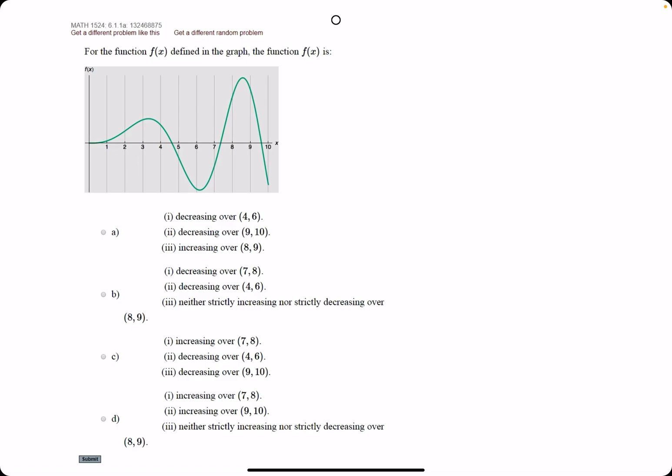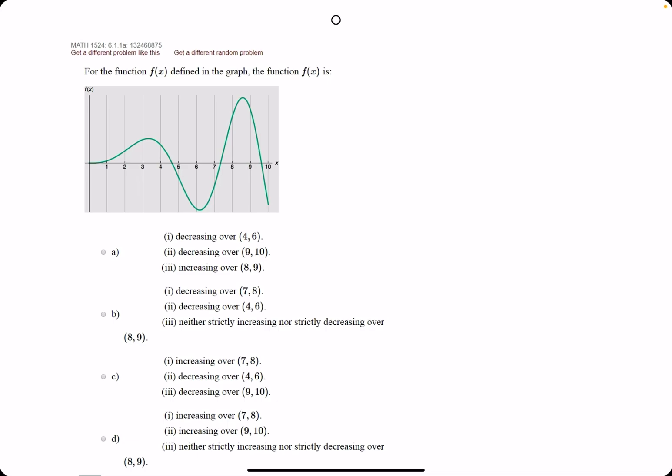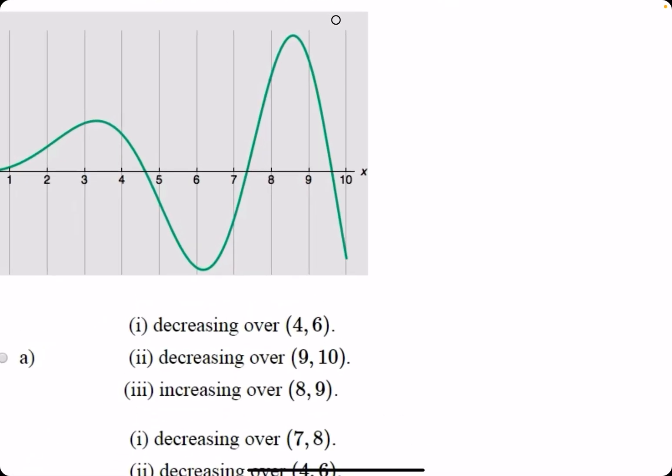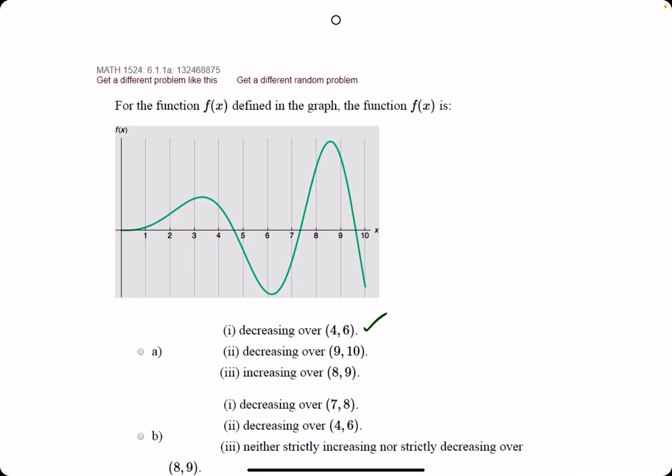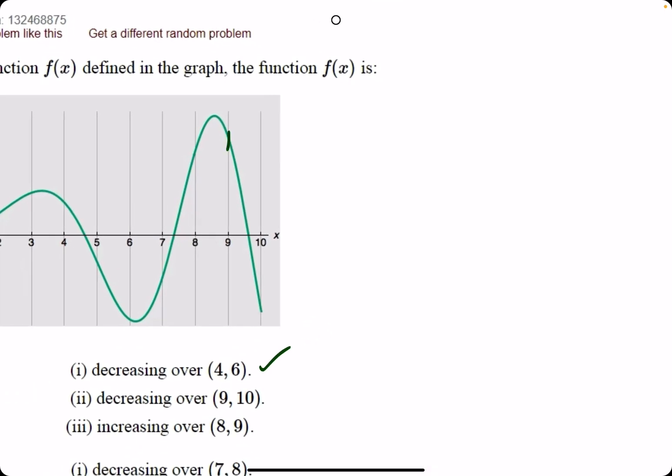Let's start with statement a. They say decreasing over (4, 6). So from 4 to 6, does this function decrease? Yes, that is the case, so this is true. Number two: decreasing over (9, 10). From 9 all the way to 10, it does look like it's decreasing—going down from left to right—so this is true.